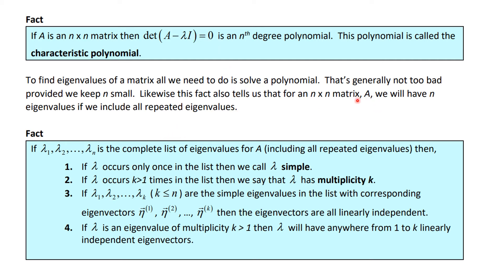If it's an n by n matrix we'll have n eigenvalues if you include the repeated eigenvalues with a higher multiplicity. So if this is the complete list of eigenvalues for A including all repeated values, then if lambda occurs only once in the list we call it simple. If it occurs with a multiplicity of k we call it multiplicity k. And if these are the simple eigenvalues in the list and they correspond to these eigenvectors, then the eigenvectors are all linearly independent.